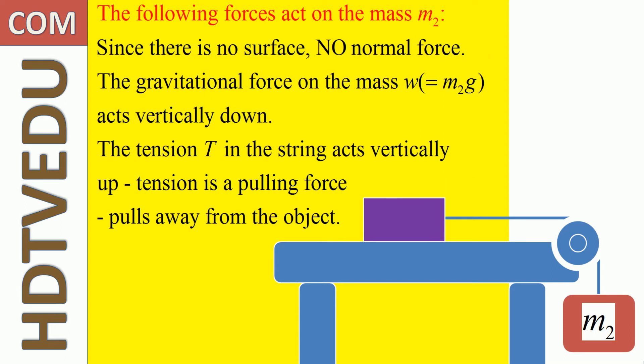The following forces act on mass M2. Since there is no surface, there is no normal force. The gravitational force W equals M2g, where M2 is the mass in kg and g is the acceleration due to gravity in meters per second per second, acts vertically down. The tension T in the string acts vertically up. Tension is a pulling force — it pulls away from the object.